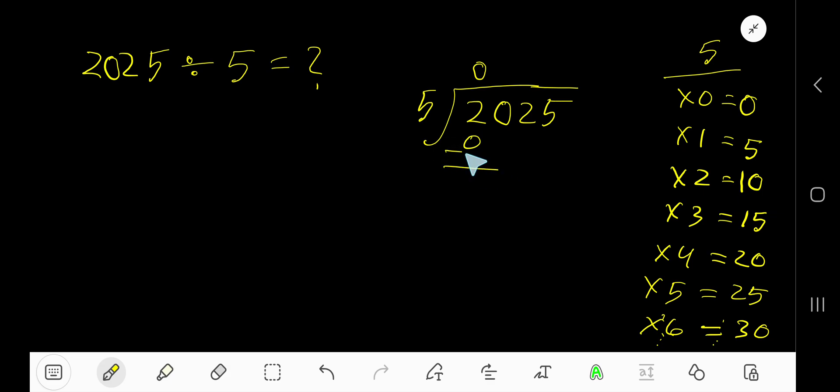0 times 5 is 0. Subtract from 2, bring down the 0, making 20. 5 goes into 20 how many times? 4 times. 4 times 5 is 20, subtract to get 0. Bring down the next 2. 5 goes into 2 zero times, as 2 is less than 5.